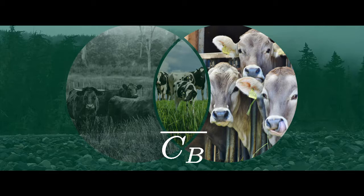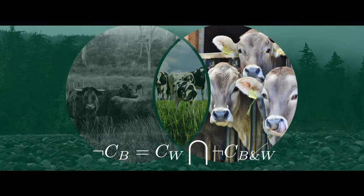From observation, we can see that this set is identical to the set of all cows which are white but not black and white. So we can formulate the following identity: ¬C sub B = C sub W ∩ ¬C sub B∩W. These operations serve as the foundations for constructing mathematics from sets.